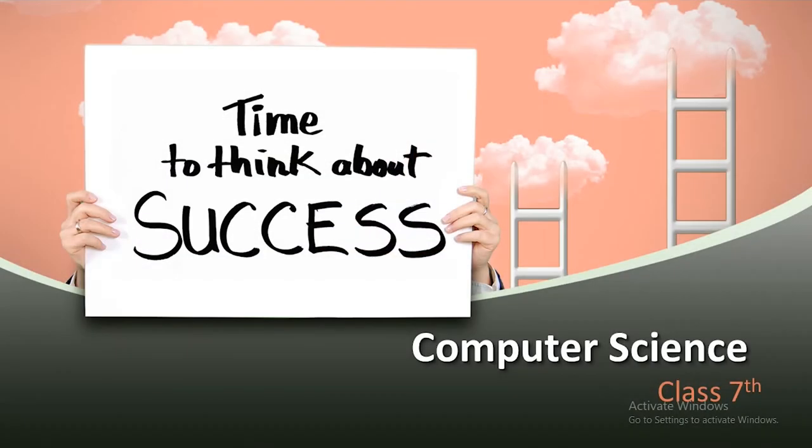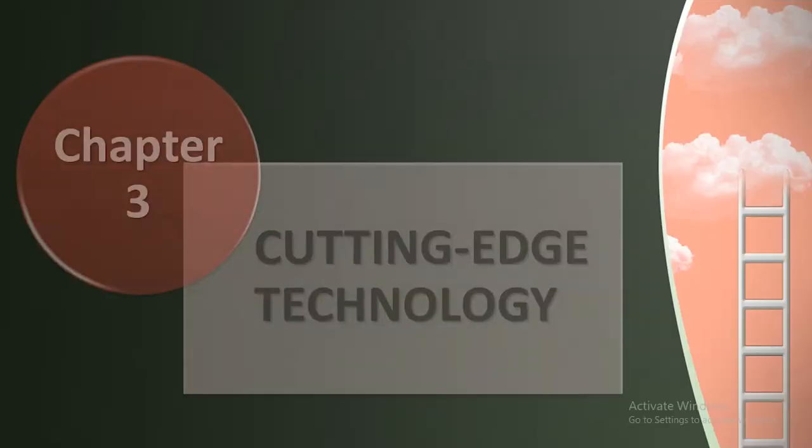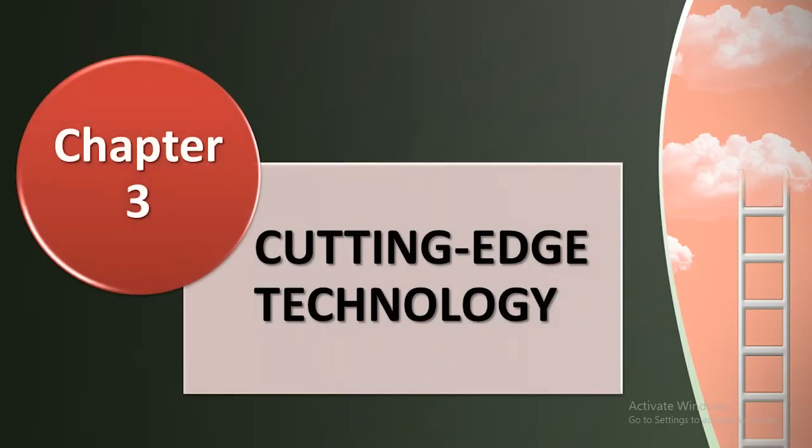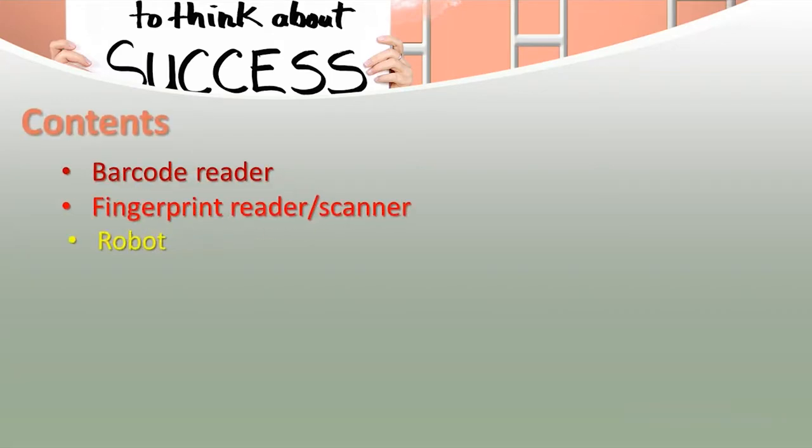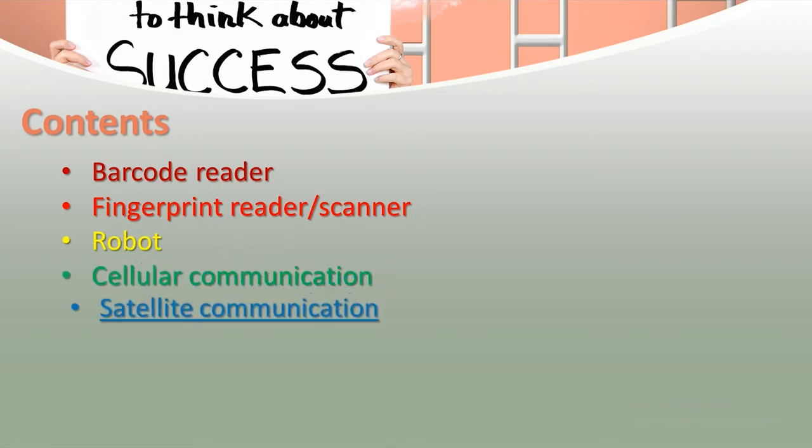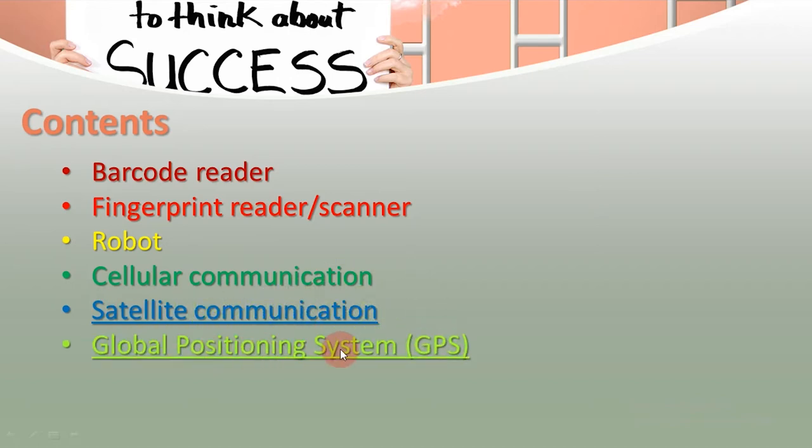Today we are studying computer science of class 7. The chapter we are studying is chapter number 3 and its name is cutting edge technology. We have studied about barcode reader, fingerprint reader, robot and cellular communication. Today we will study satellite communication and GPS. Let's start the lecture.